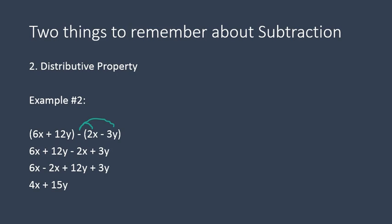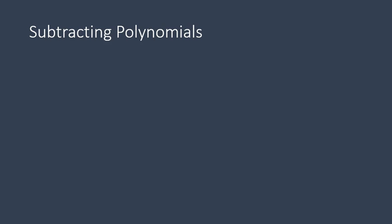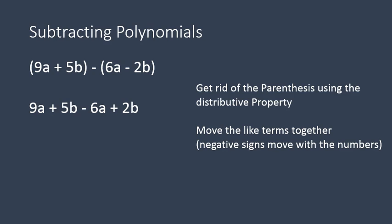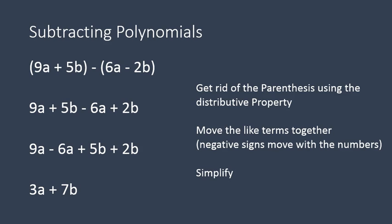Let's go ahead and do some subtracting questions. 9a plus 5b minus the quantity 6a minus 2b. First, we get rid of the parentheses and remember to use the distributive property. The first set of parentheses remains the same: 9a plus 5b. The second set becomes negative 6a and positive 2b — using the distributive property to change the sign of everything inside the second set of parentheses. Now we move the like terms together, keeping negative signs with the terms, and join them for our final answer. That's how we solve all subtraction questions with polynomials.